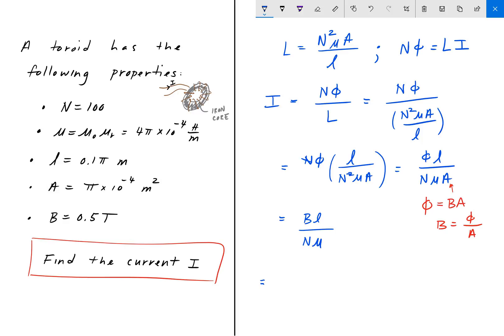So that gives us I = BL over Nμ. We can plug those values in. We should have all the values that we need. We have B = 0.5, L = 0.1π, N = 100, and μ = 4π × 10^-4. When we plug all that in we get a current value of 1.25 amps. And that is our answer.